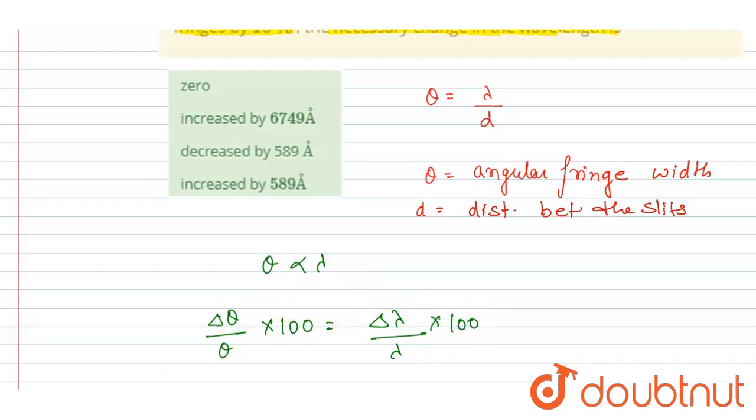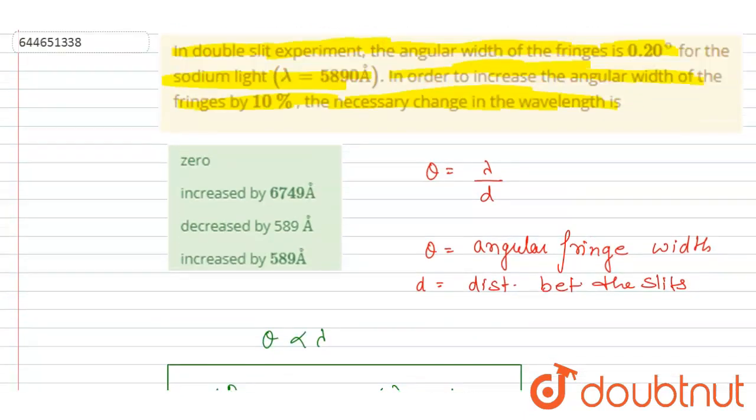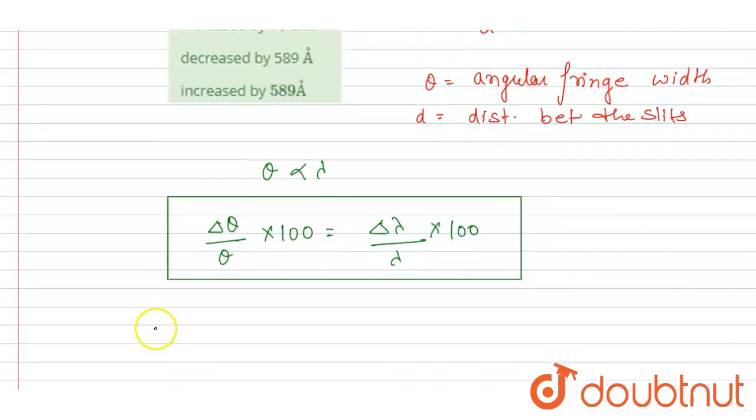Because they are directly proportional, the percent increase in lambda will also equal the percent increase in the fringe width. So if I calculate the necessary change in wavelength, the change in wavelength I will write...